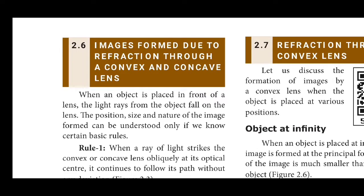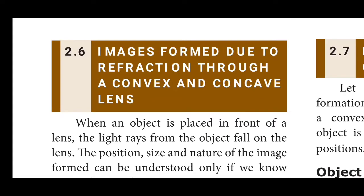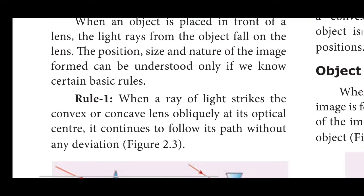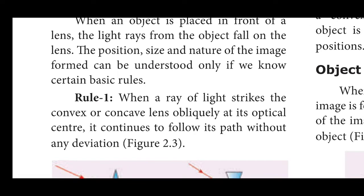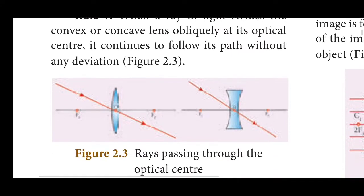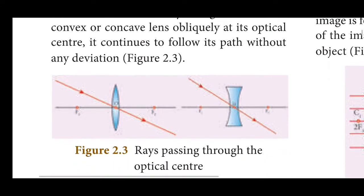Image formation through the convex and concave lens follows three rules. First rule: when a ray strikes the lens through the optical center, it passes through without any deviation along the principal axis.